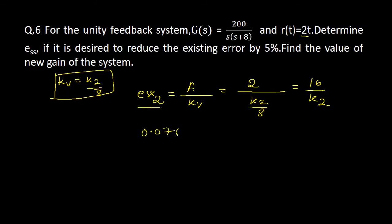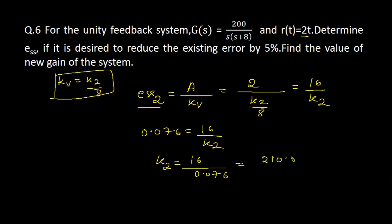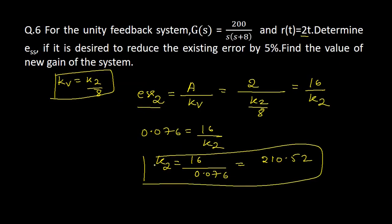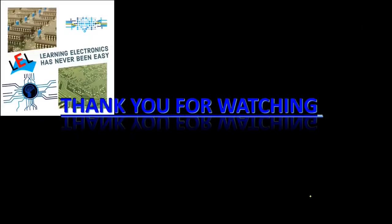Now putting the value of E_SS2: 0.076 = 16/K2, so K2 = 16/0.076, which gives K2 equal to 210.52. So the new value of gain K is equal to 210.52. Thank you very much for watching — please do subscribe to my channel for more updates.